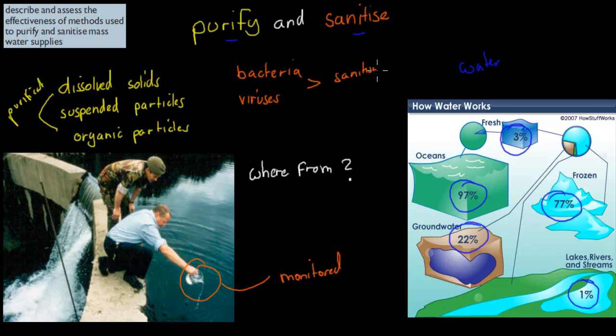And remember, there's obviously agriculture, there's forest logging, there is all these feces, sewage, all that stuff would be in water. And that could lead to many of these parts which could be basically infesting our water supplies. So before we start, I'll read over the dot point. It says, describe and assess the effectiveness of methods used to purify and sanitize mass water supplies.